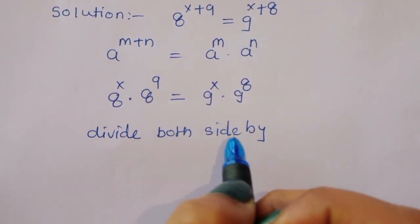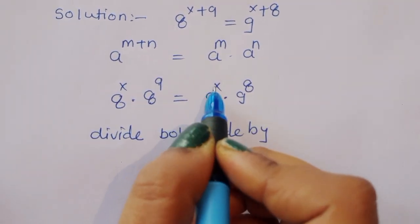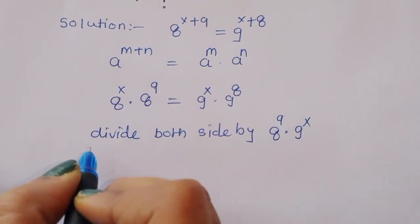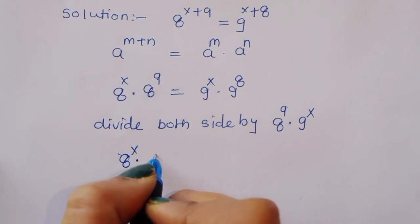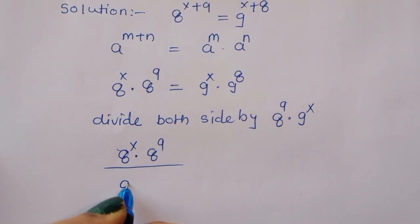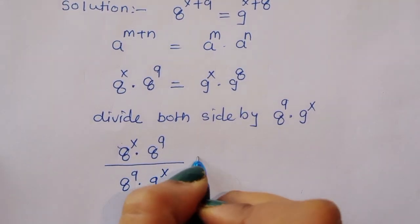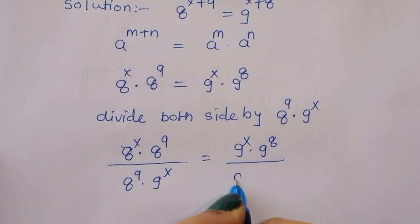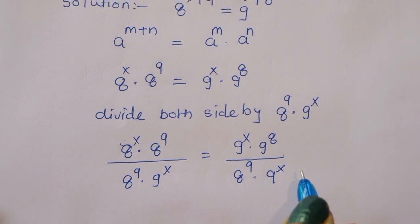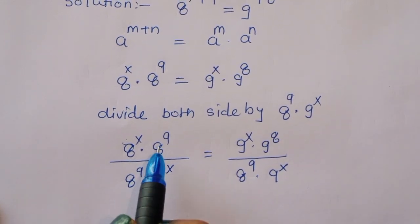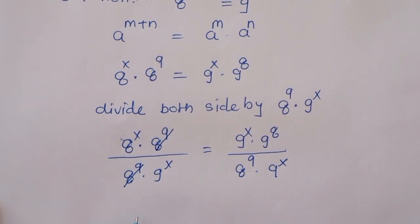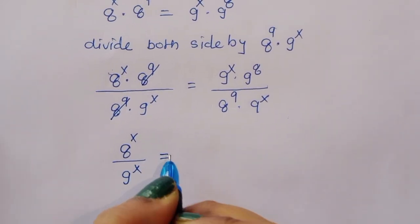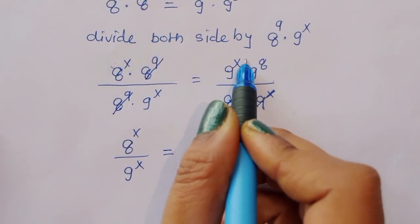Now dividing both sides by 8 power 9 times 9 power x. We get 8 power x times 8 power 9 divided by 8 power 9 times 9 power x, equal to 9 power x times 9 power 8 divided by 8 power 9 times 9 power x. The 8 power 9 terms cancel, and the 9 power x terms cancel.